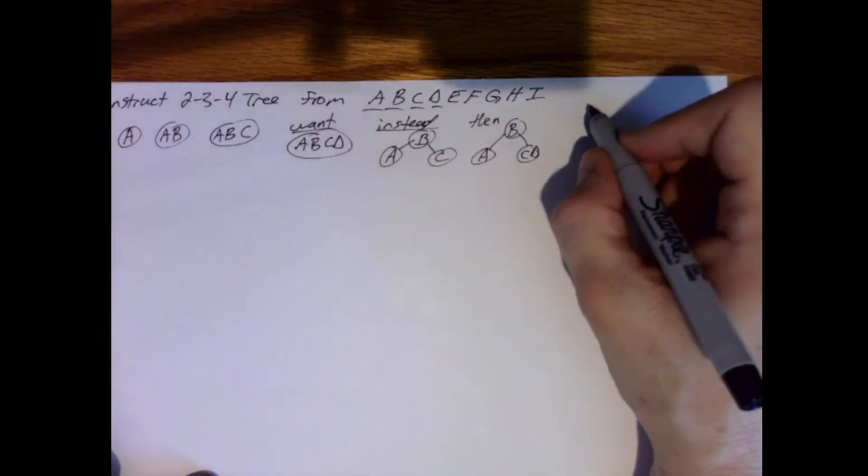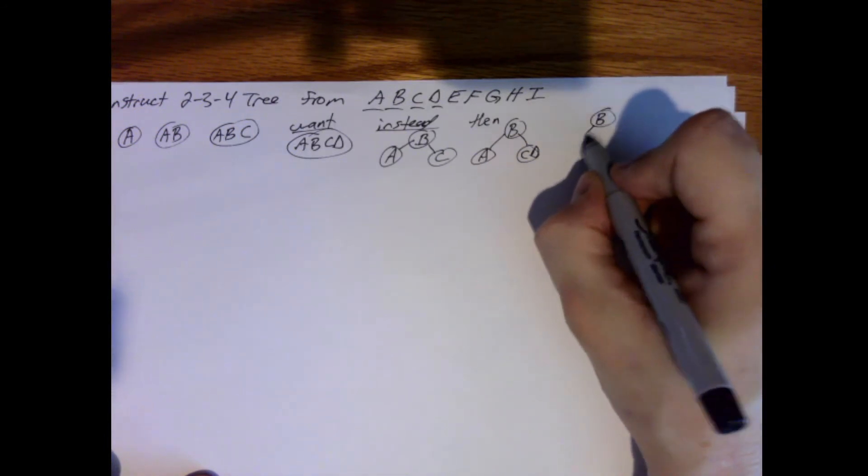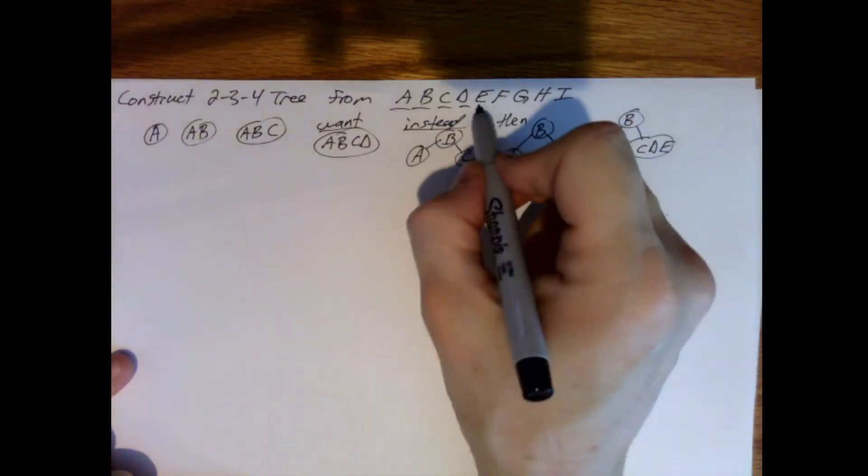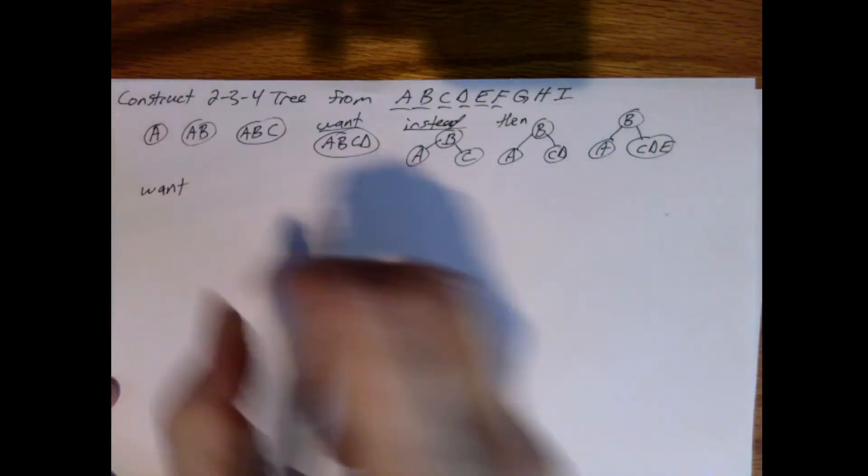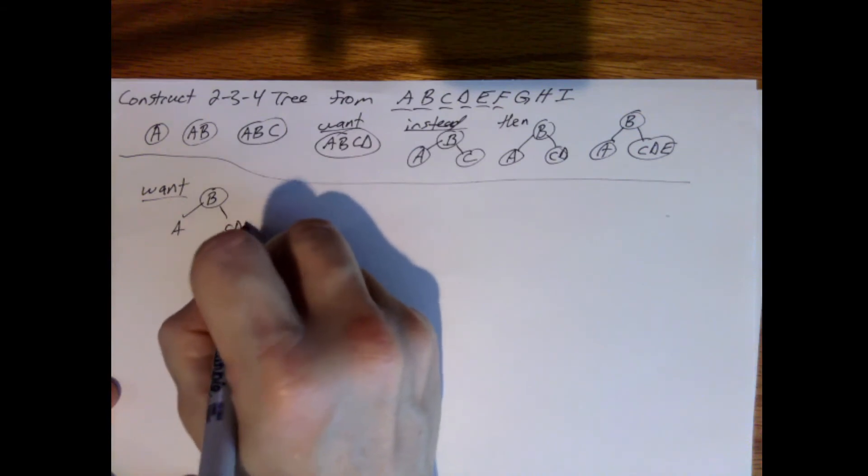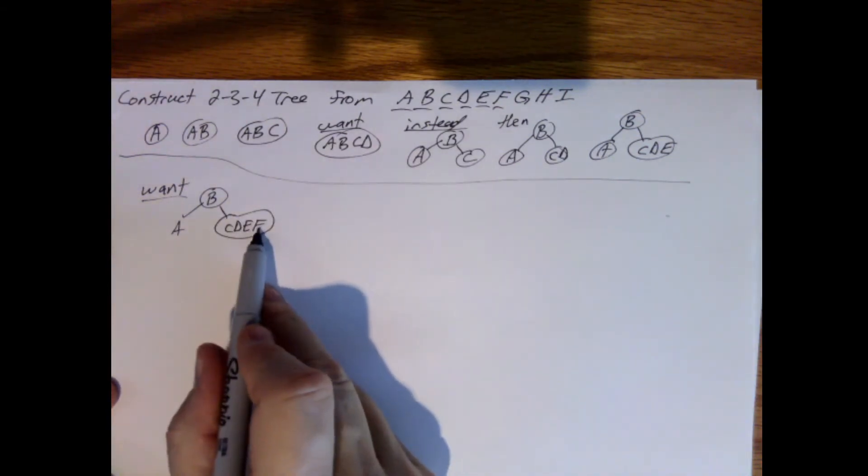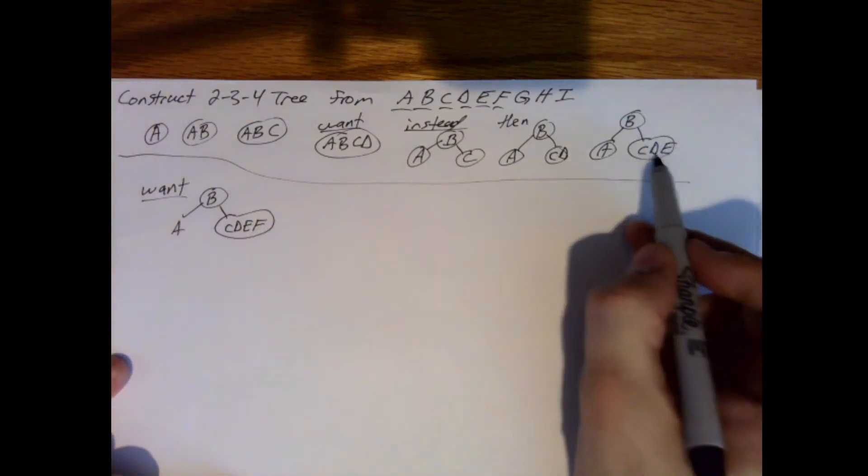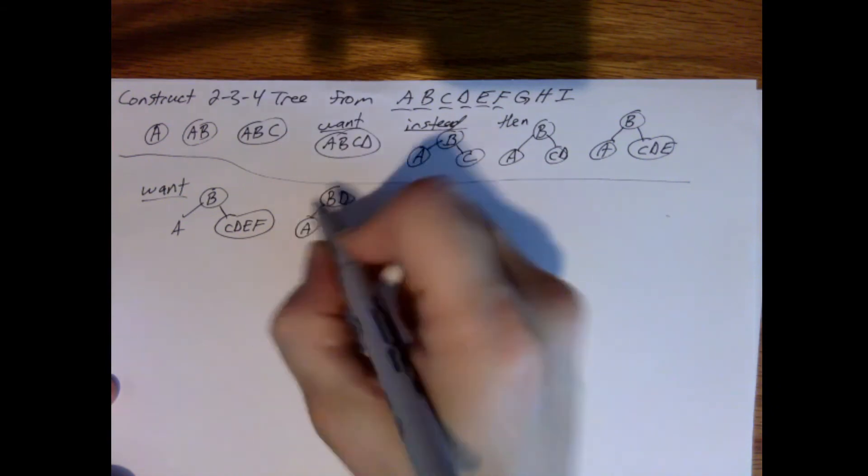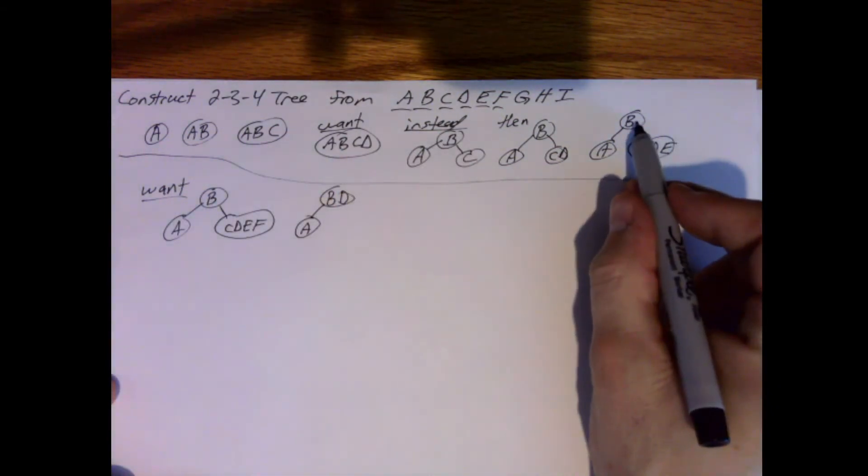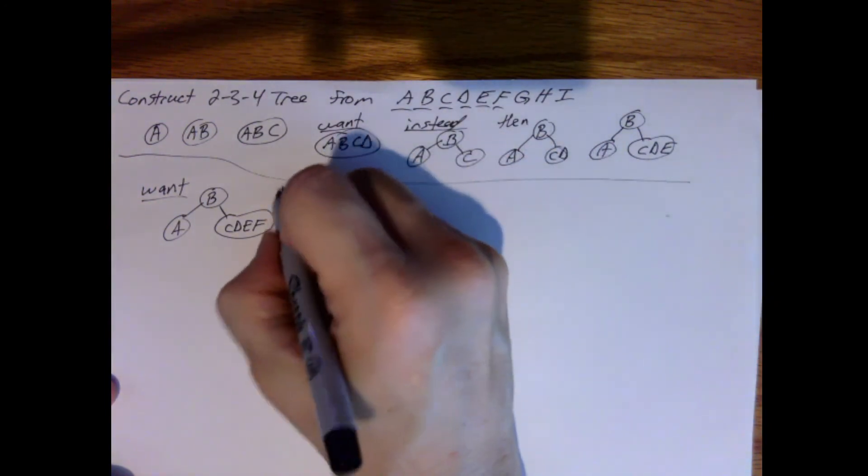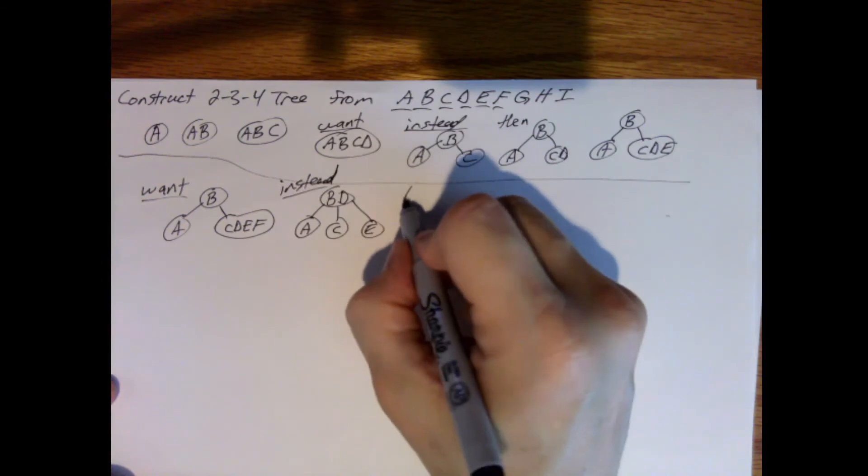Add the E. So this would be B, A, C, D, E. So now I want to add the F. Four keys. I can only have three. So instead, I need to split on the D, so D moves up to the node with B. So A is still right here. The C is after B but before D. Here's the E. Then we add the F.